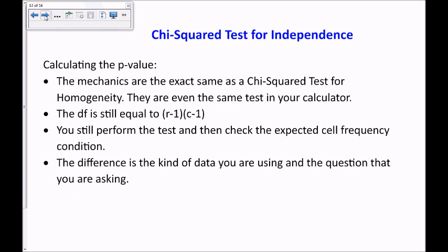The mechanics for calculating the p-value are the exact same as a chi-squared test for homogeneity — in fact, they are even the same test in your calculator. Go to stat, tests, and run a chi-squared test with the same data setup. Degrees of freedom is still rows minus one times columns minus one. You still perform the test and then check the expected cell frequency condition. The difference between the independence test and homogeneity test is the kind of data: one big population vs. separate groups, and whether you're asking if variables are independent or if groups share the same distribution.